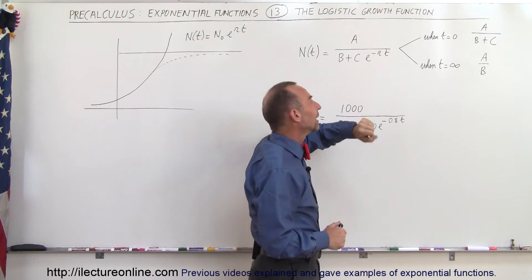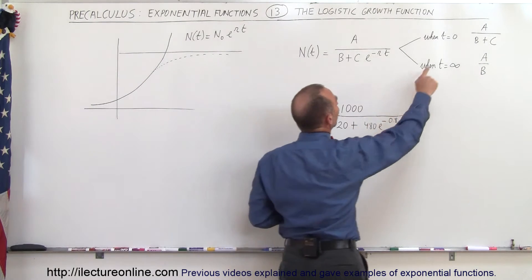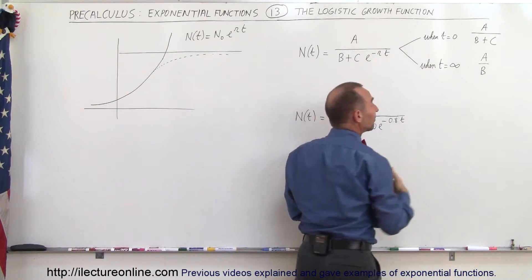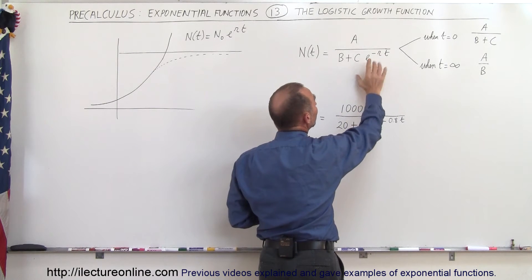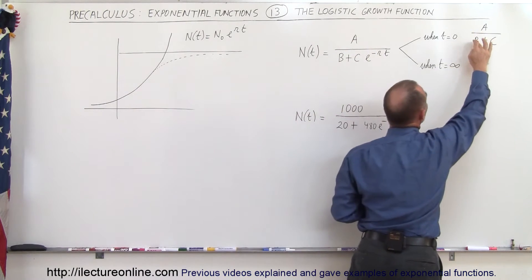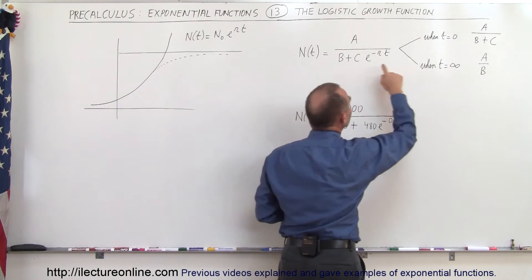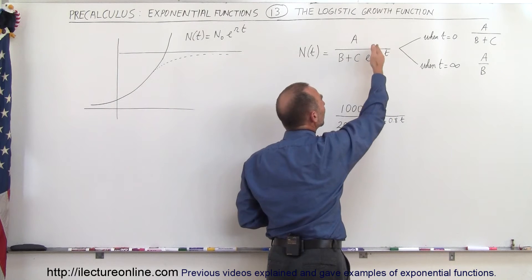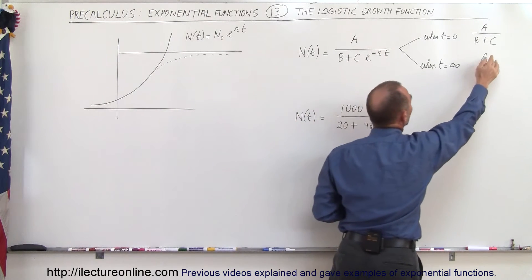Notice there's a minus there. If you want to evaluate the function, notice that when t is equal to 0, when time starts out, e to the 0 power is equal to 1, that means this whole function becomes A divided by B plus C. And when time goes to infinity, e to the minus infinity is 1 over infinity which is 0, that means the whole function goes to A over B.